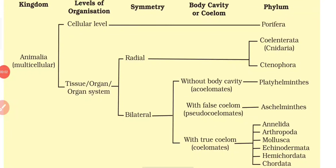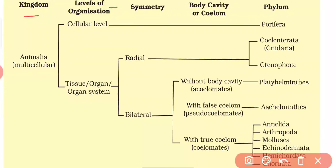In this video we will learn about classification of animals — a broad classification on the basis of fundamental characters described in this picture. We have kingdom, levels of organization, symmetry, body cavity, and then phylum. All animals in kingdom Animalia are multicellular.